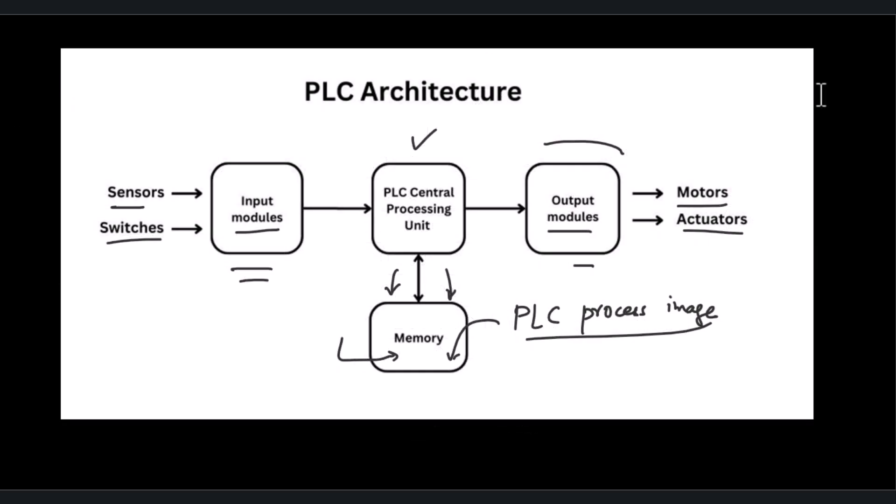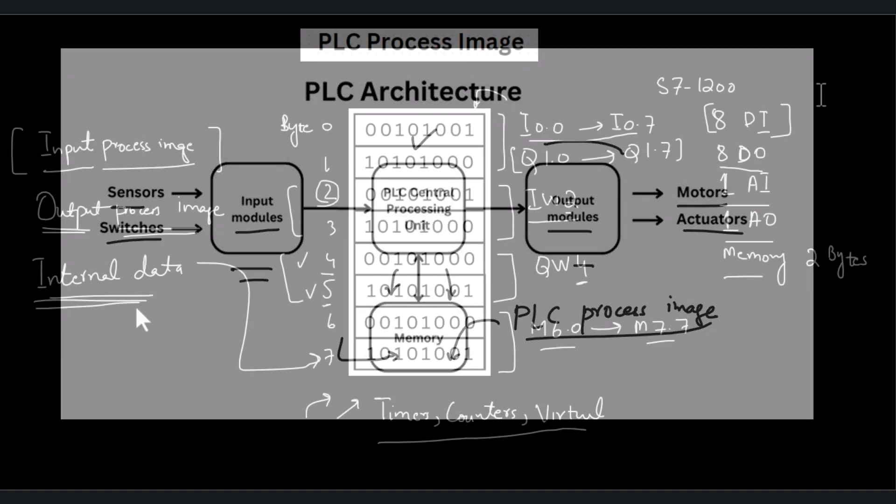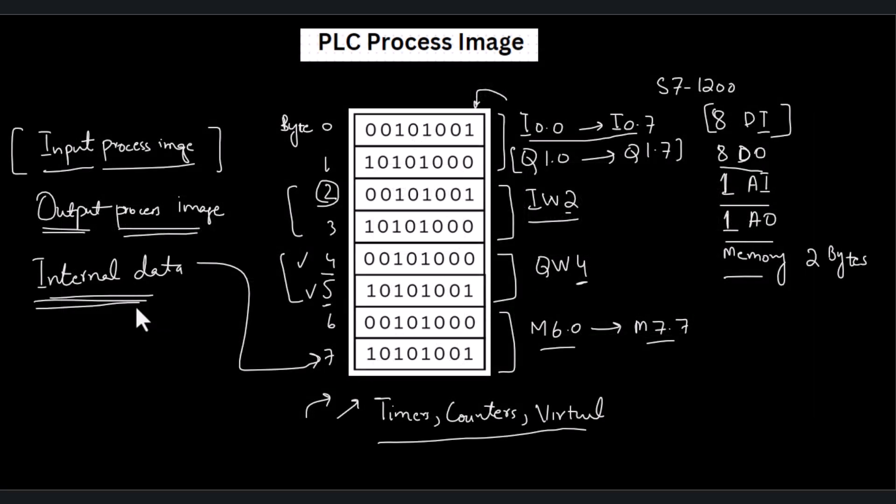It is important to understand that the PLC process image is updated with every PLC scan cycle. The CPU of the PLC reads data from the input modules coming from sensors and switches and updates the input process image. It also processes the data to generate outputs and updates the output process image, while continuously updating the process image with the internal data of the program.